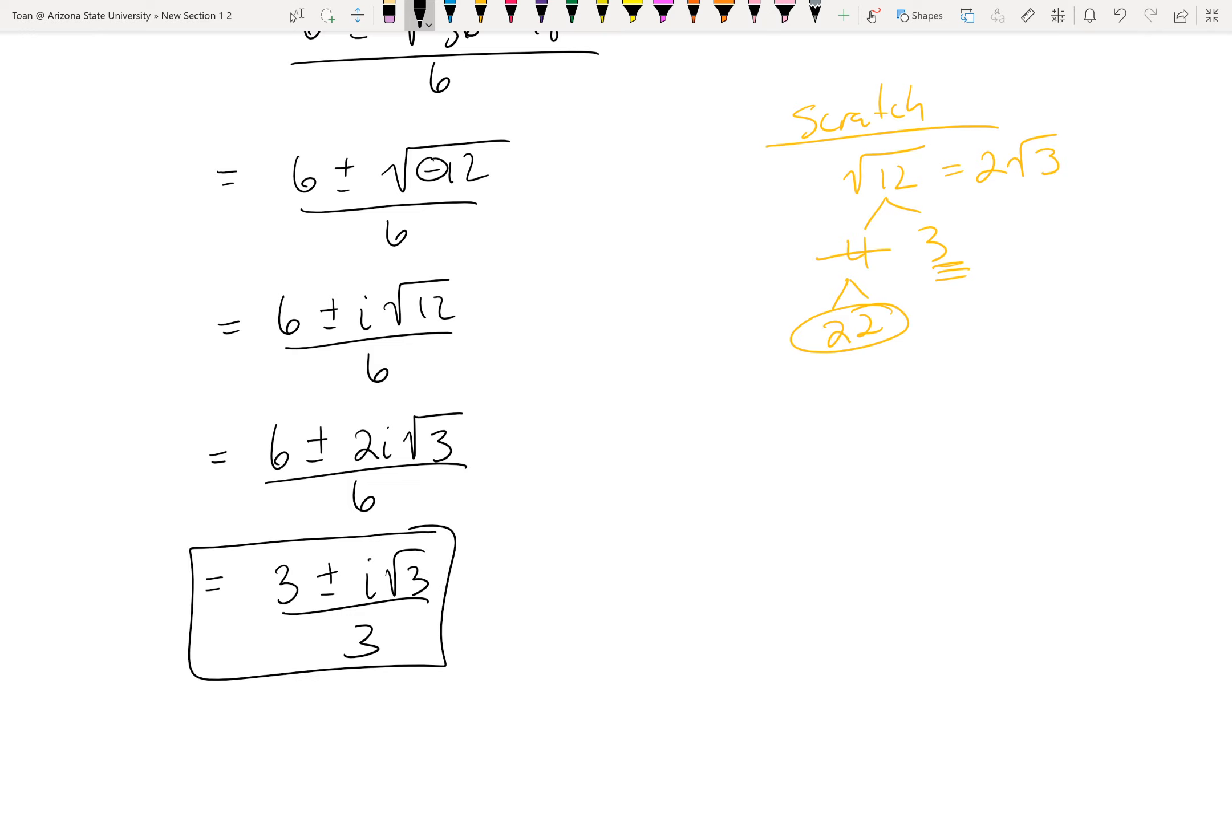If your answer has weird symbols in it like i's and radicals, you can go ahead and just leave it as one block. But you might see on answer keys the plus or minus split apart. So if you were to split this apart, the two answers would be 3 + i√3 over 3 and 3 - i√3 over 3. Either way is fine by me.